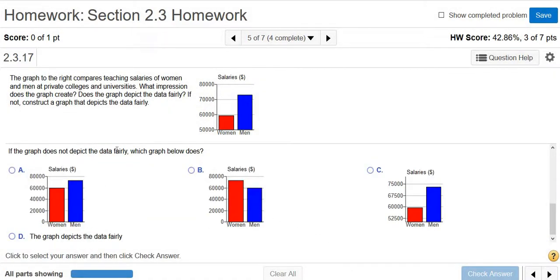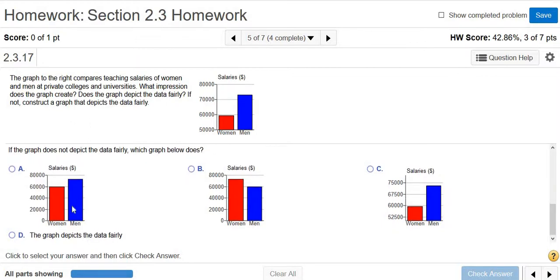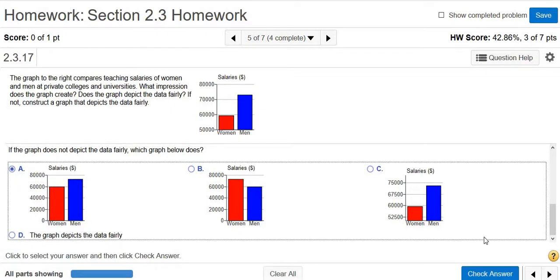If the graph does not depict the data fairly, which graph below does? I think this one here would be better. This one looks just like this one except it's starting at zero. This one's wrong because even though it starts at zero, it has women higher than men. Men still make more money than women according to this graph. So I'm going to click this.